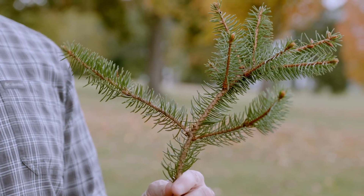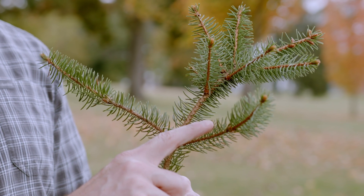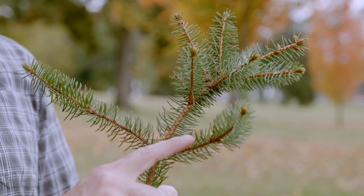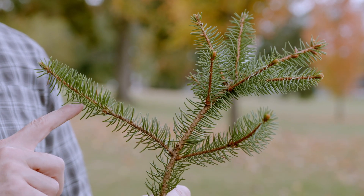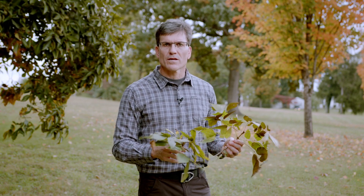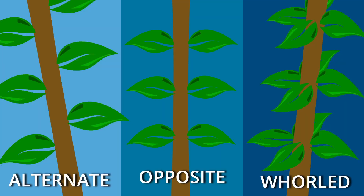Leaf and branch arrangement is a key way that we differentiate various species of trees. With our conifers, we often look at the number of needles attached in the fascicle, as well as the orientation or arrangement of the needles. In angiosperms, we look at both leaf arrangement and leaf type to differentiate species. With branch arrangement, we have three different types: alternate, opposite, and whorled branching. And with leaf types, we have simple leaves and compound leaves.